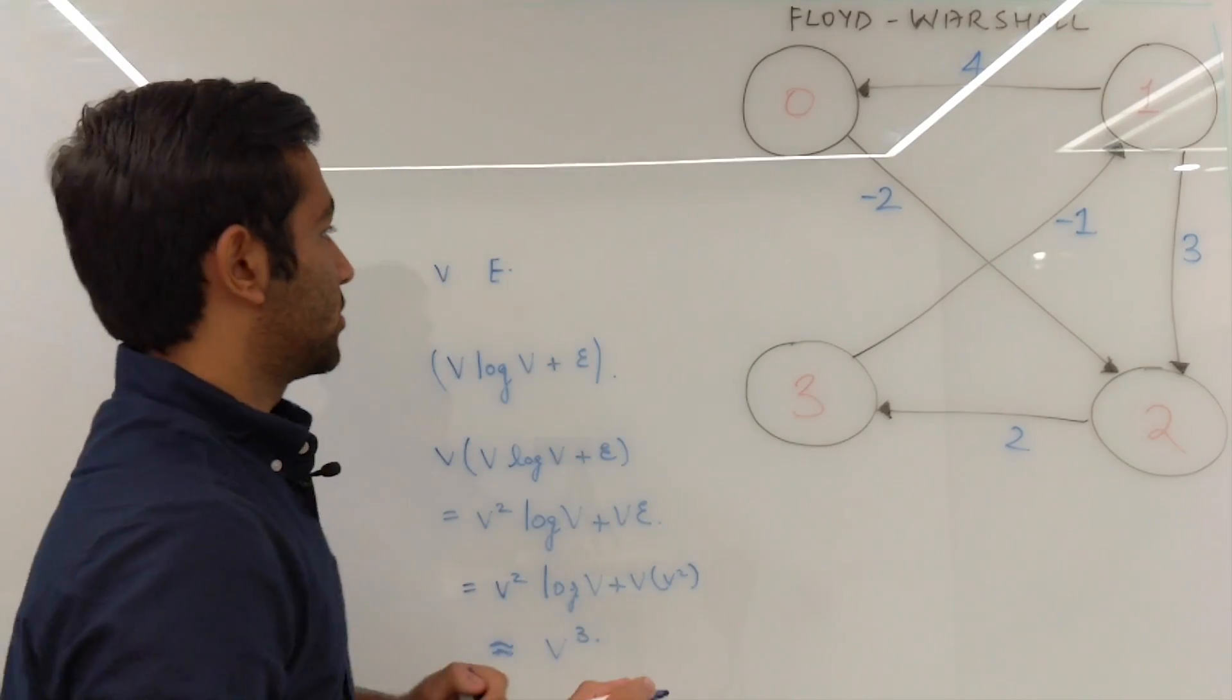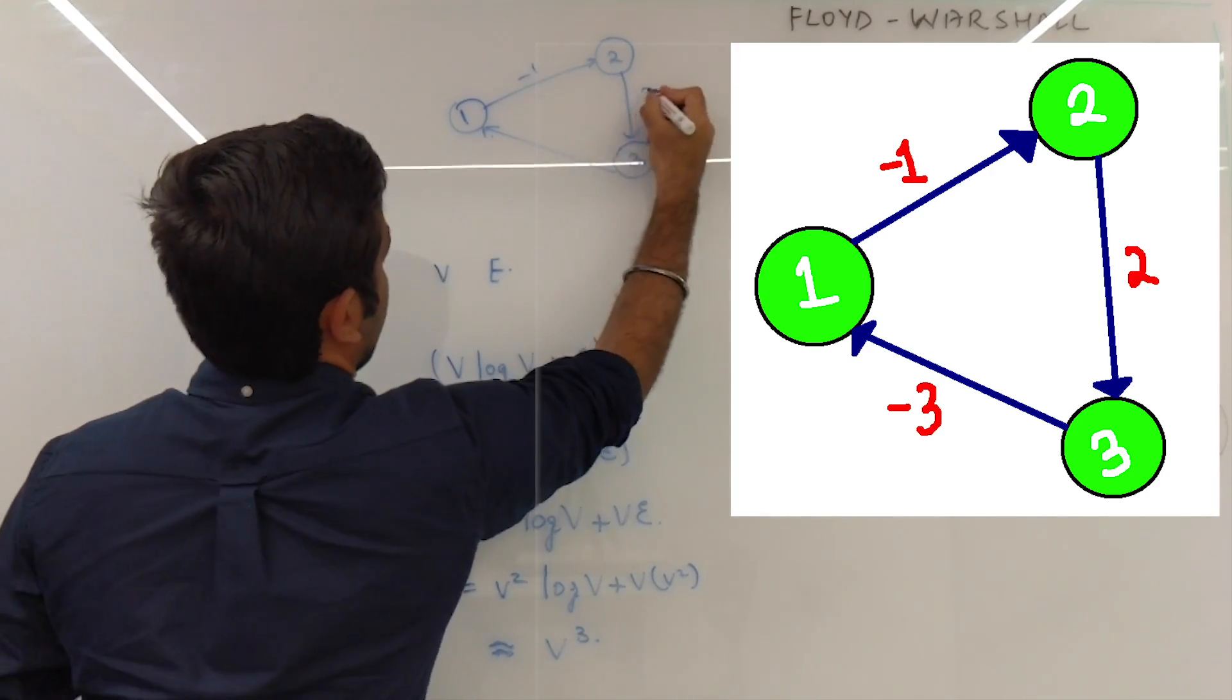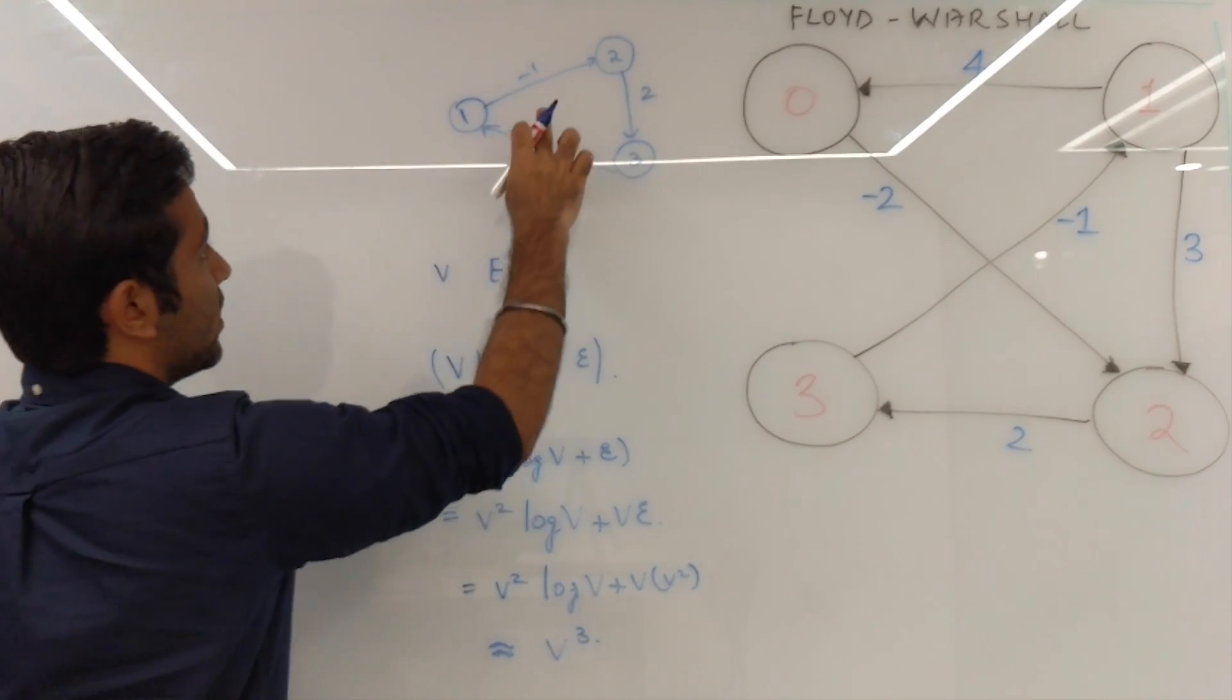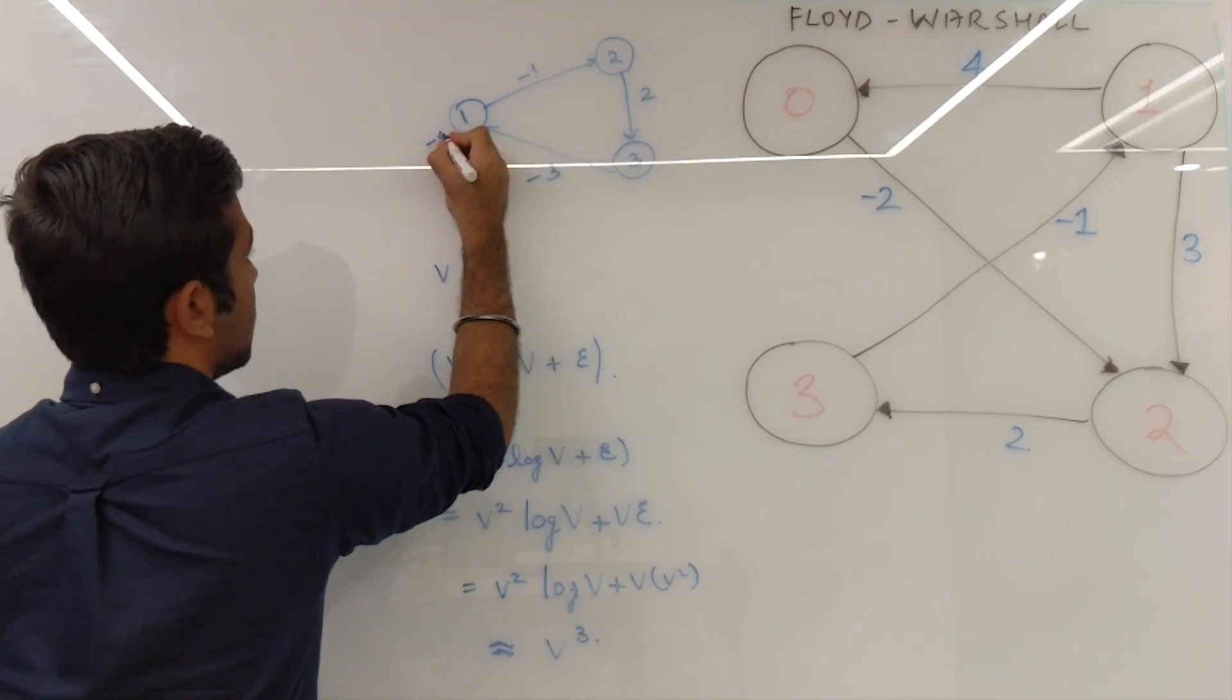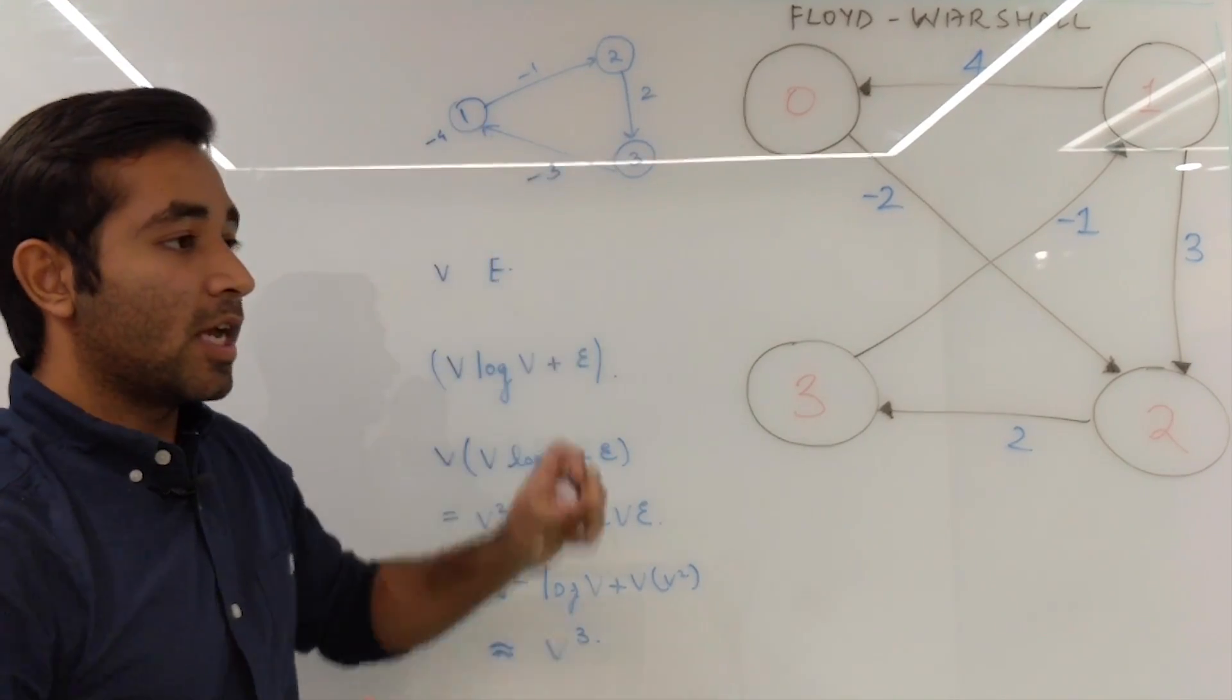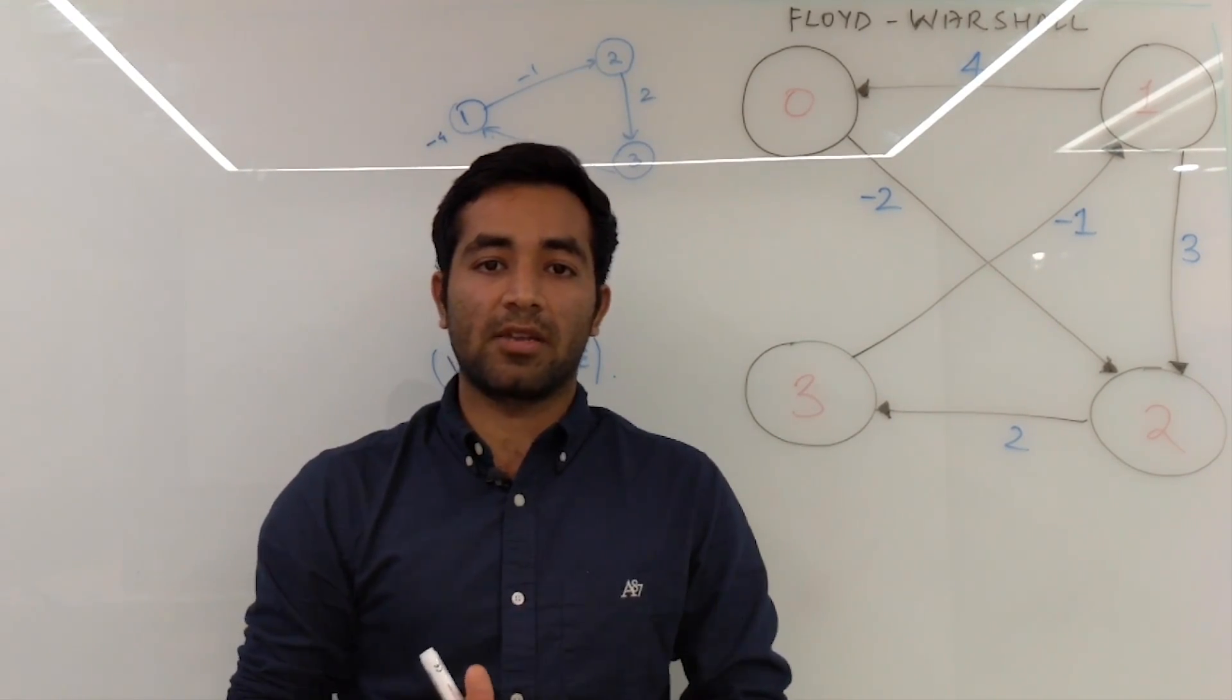What do I mean by negative cycles? So consider a graph like this. When I start from vertex 1 and try to come back to 1, the net distance covered is minus 1 plus 2 which is 1, and minus 3 which is minus 4. And hence you will never come to a minimum value because every time you take a circle around this graph, you will keep on reducing the value. So the problem will be unsolvable. Hence we will focus on the graphs which have just negative edges and not negative cycles.